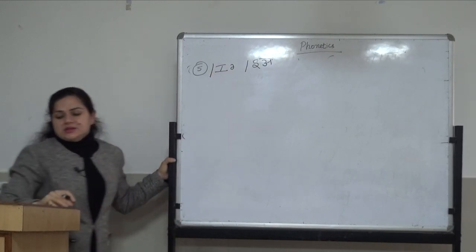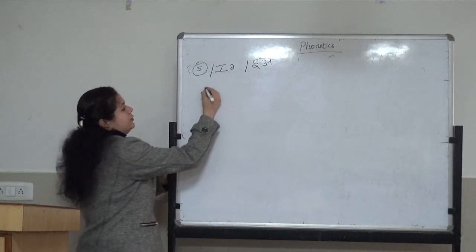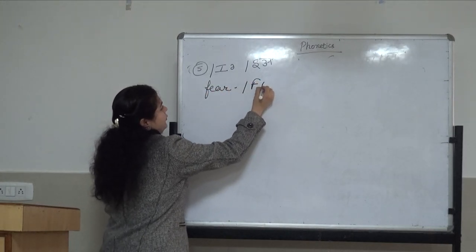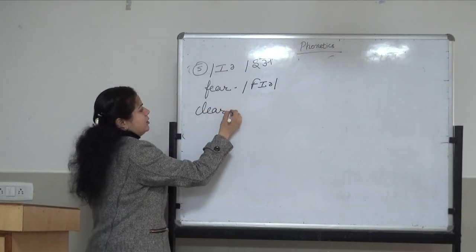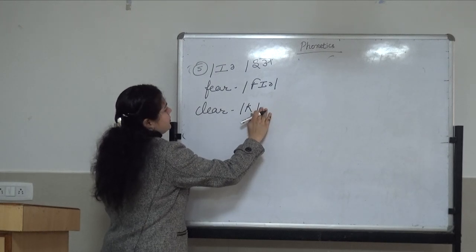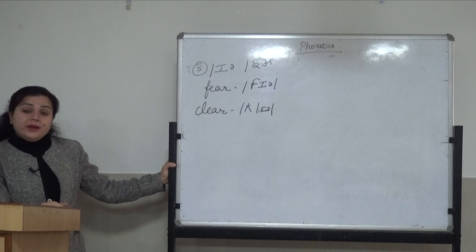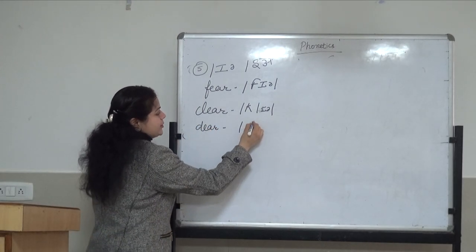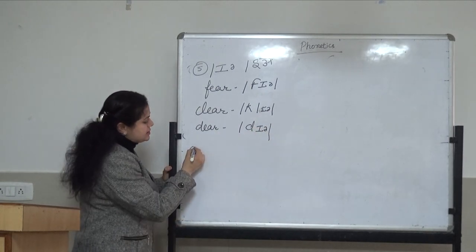The next symbol is /ɪə/. For example 'fear': /fɪə/. 'Clear': /klɪə/. 'Dear': /dɪə/. This is the symbol of /ɪə/. The sixth one is next.